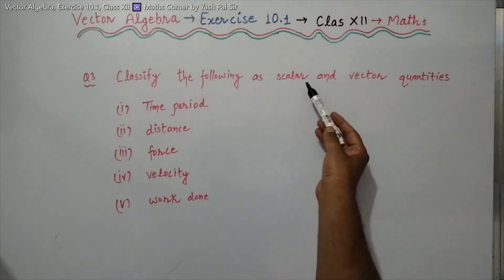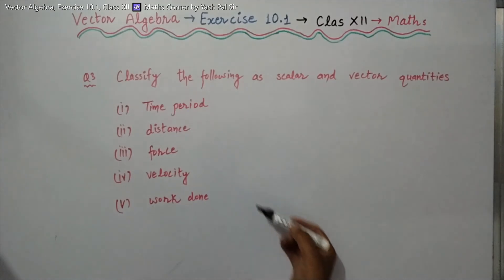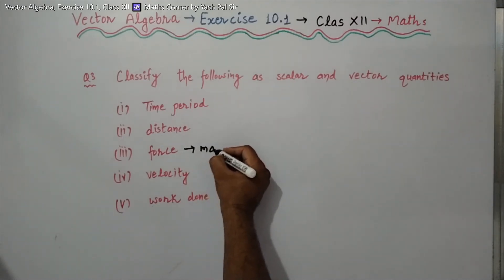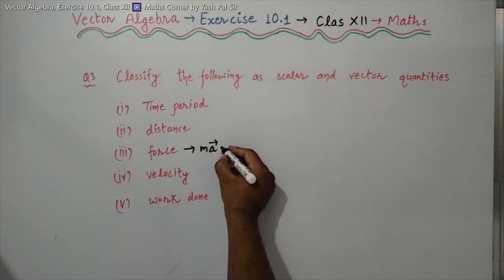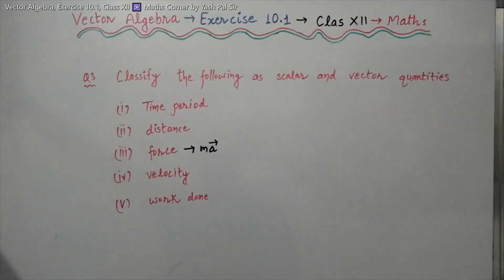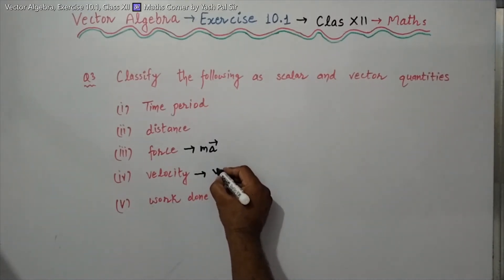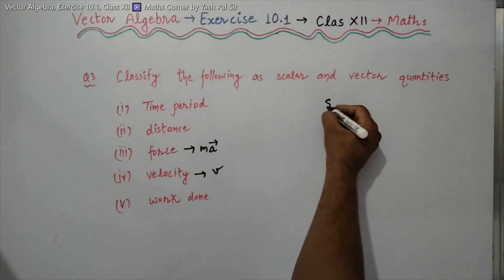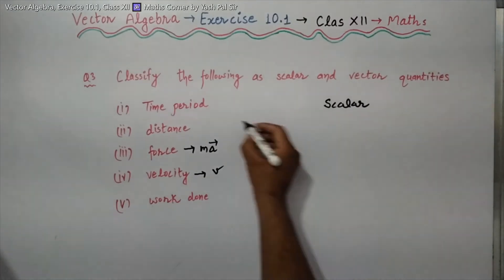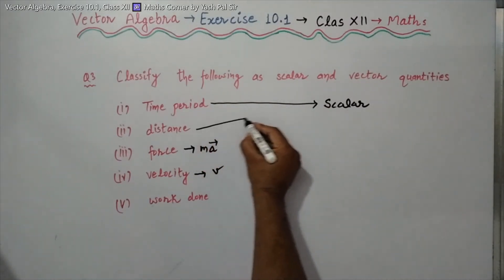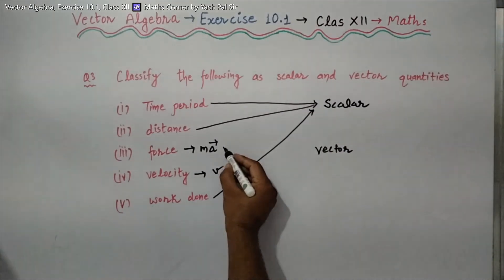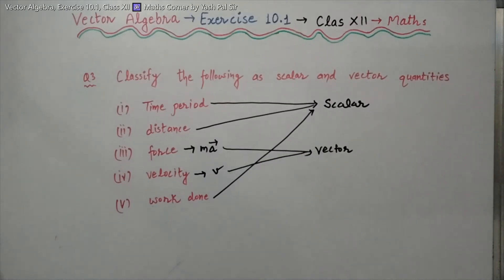Question 3: Classify the following as scalar and vector quantities. Time period — scalar. Distance — scalar. Force = mass × acceleration; since acceleration is a vector, force is a vector quantity with magnitude and direction. Velocity — vector, it has magnitude and direction. Work done — scalar. So scalar quantities: time period, distance, work done. Vector quantities: force and velocity.